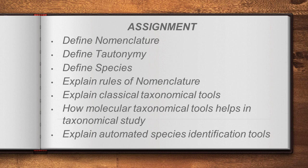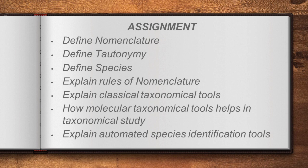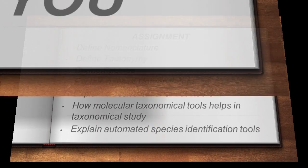Here are some assignment questions. Two/three mark questions: define nomenclature, define tautonomy, define species. Five mark questions: explain the rules of nomenclature, explain classical taxonomical tools, how molecular taxonomical tools help in taxonomical study, and explain automated species identification tools. Read the book line by line and cover these highlighted questions. Hope you will do well — see you in the next class. Thank you, bye.